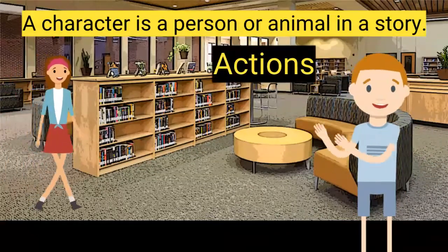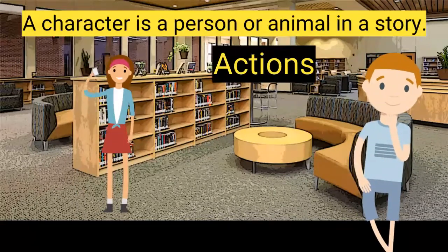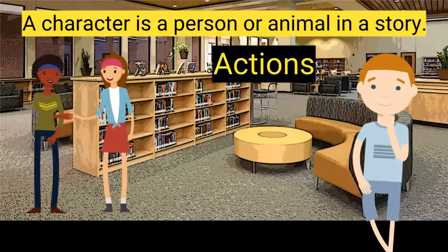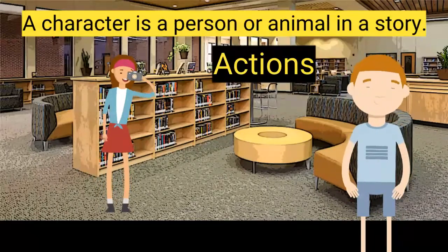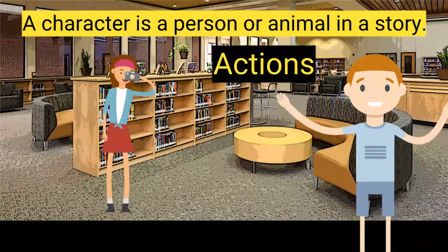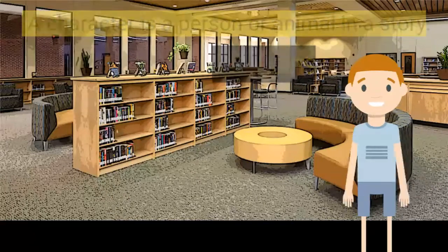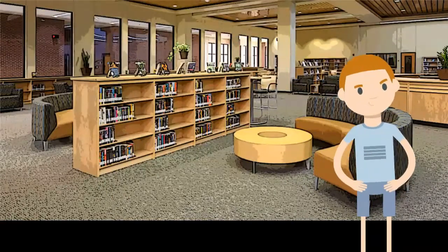A character does certain things in the story — these are the character's actions. A character can talk on the phone, shake hands with someone, or even dance. Your turn: what action is this character doing? Correct — this character is taking pictures.